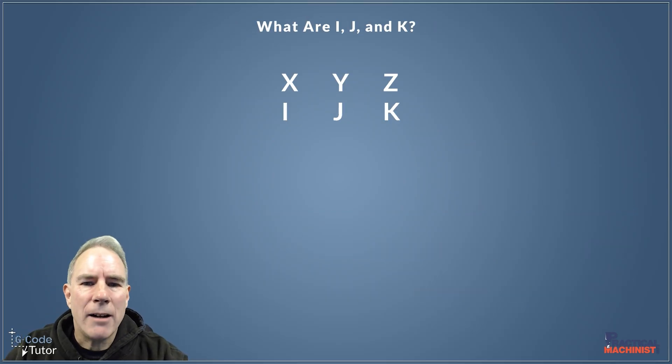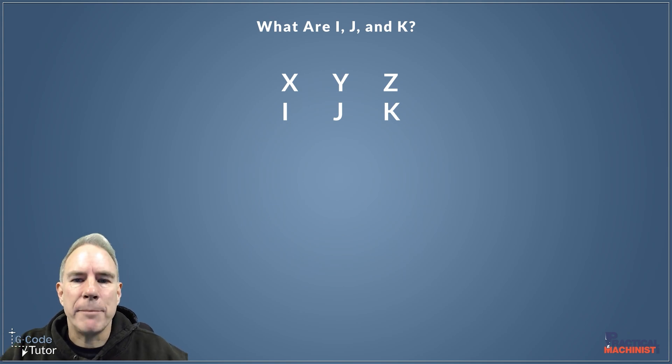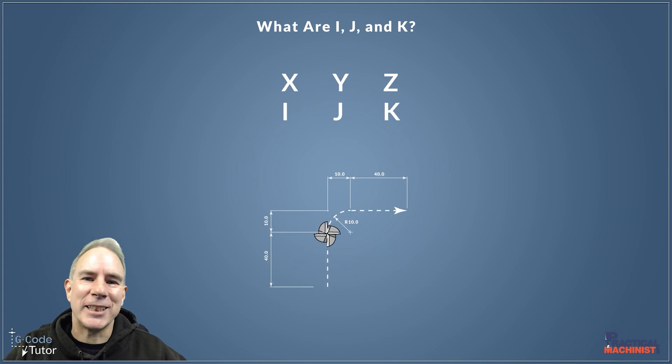And finally, we have our I, J, and K. Now, these are not official axes. These are center points of circles and radii. But they're still kind of classes as axes, so I mentioned it here. Because the I does involve the X axis, J is the Y, and K there is the Z axis. So how does this work?